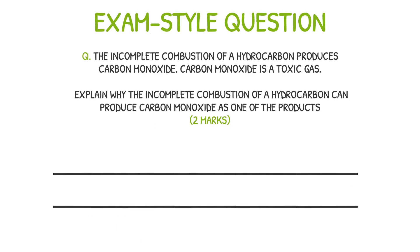Here's an example of a past paper question that I'd like you to attempt to test your understanding of the content covered in this video. Pause the video and take your time to work it through, then press play once you're ready to check your answers. The question: the incomplete combustion of a hydrocarbon produces carbon monoxide. Carbon monoxide is a toxic gas. Explain why the incomplete combustion of a hydrocarbon can produce carbon monoxide as one of the products.